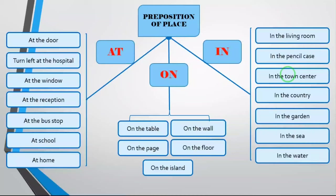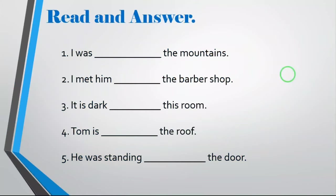Do you have any questions so far? No questions. All right. Since you have no questions, I will give you a test. Is that okay? Yeah, sure. Please read and answer numbers one to five — put the correct preposition on the line. I was on the mountains. On? Are you sure? Yes, on.